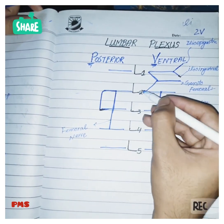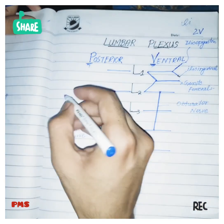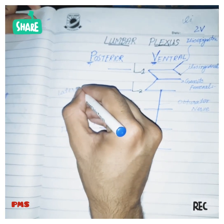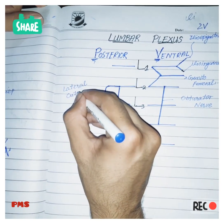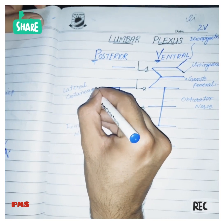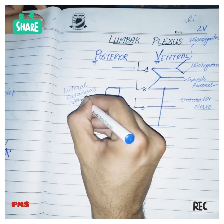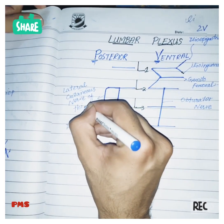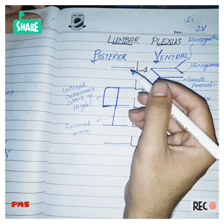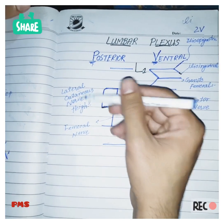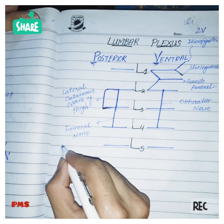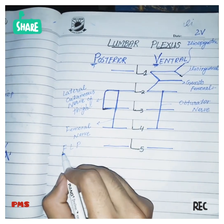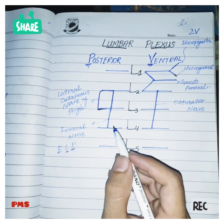From L2 to L3 only, this small branch is the lateral cutaneous nerve of thigh. So here we have shown that the femoral nerve and the lateral cutaneous nerve of thigh are from the posterior division.